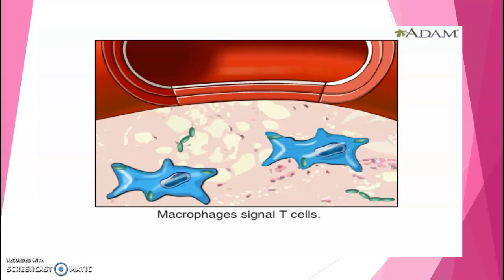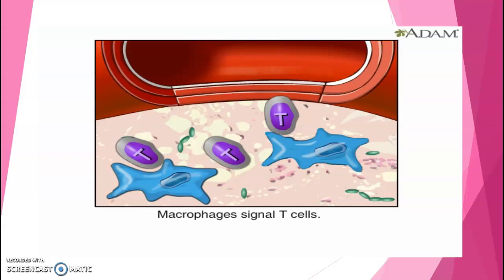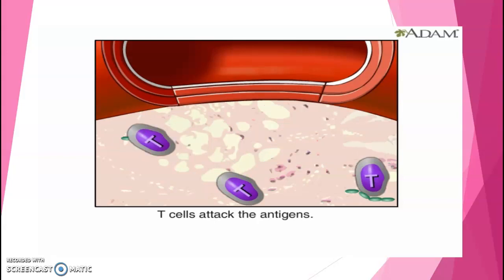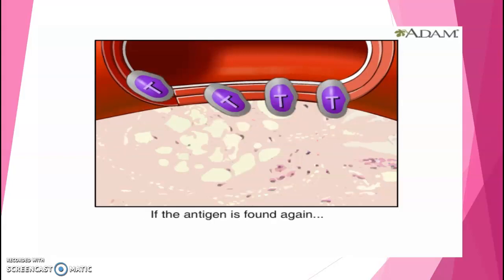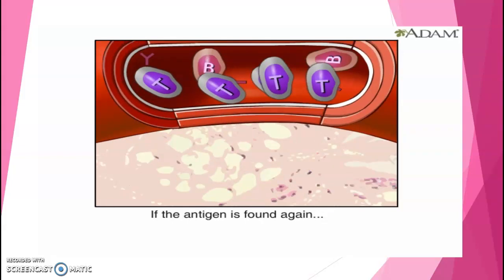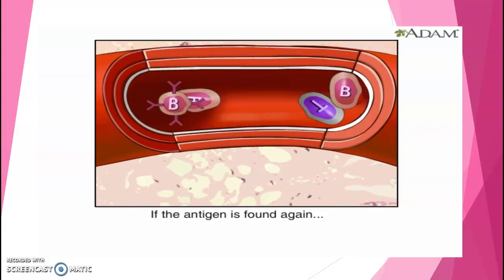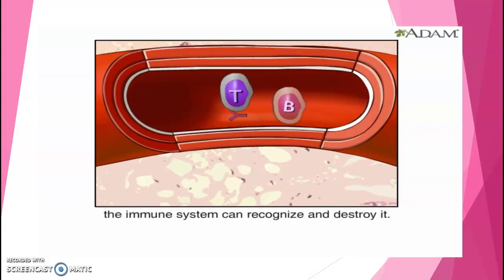The macrophages signal to T cells that the antigens are invading. Killer T cells gather and attack the antigen, then suppressor T cells stop the attack. After vaccination, B cells make defensive antibodies against the antigen, and these antibodies help the cells remember this particular antigen so they can fight it off if the body is infected again.